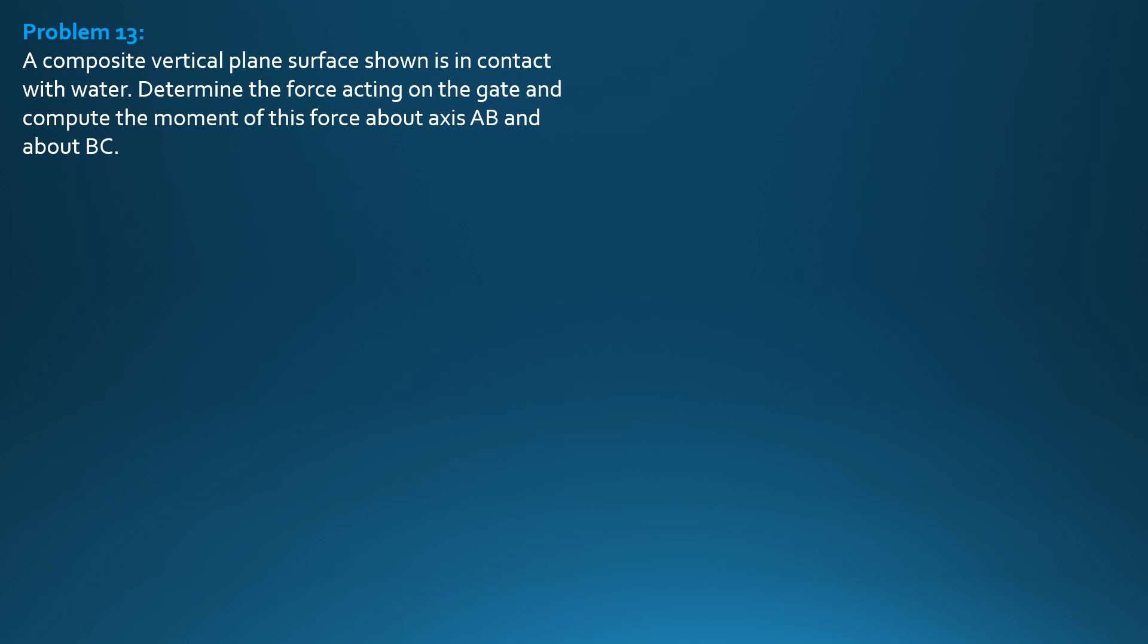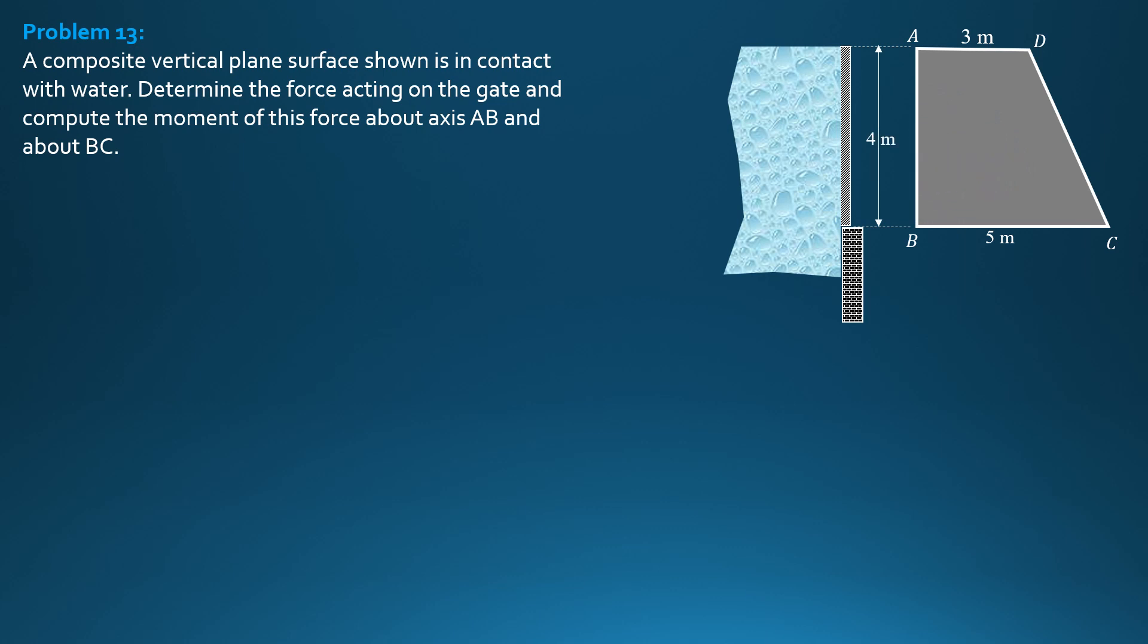So that's the given figure. Let's divide the trapezoidal gate into this manner so that one gate is rectangular flush with the water surface, 3 by 4.